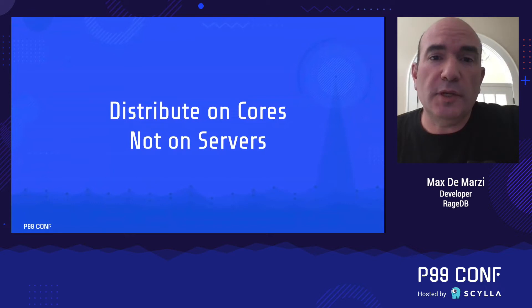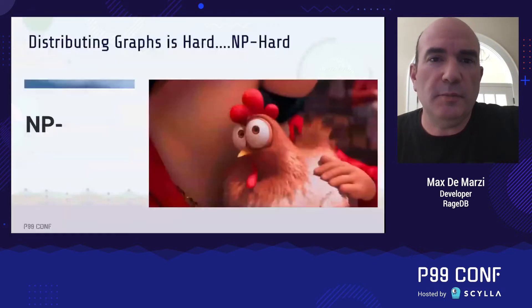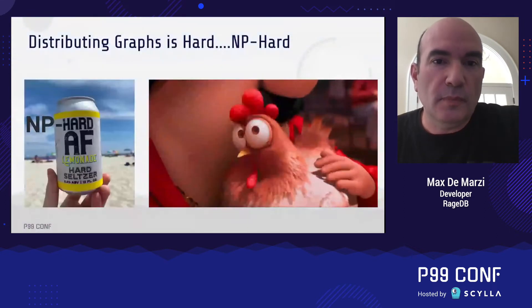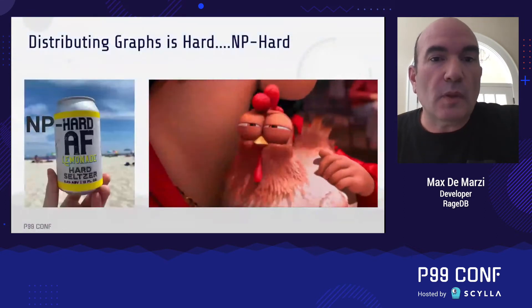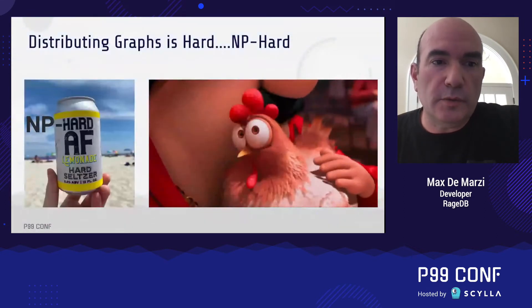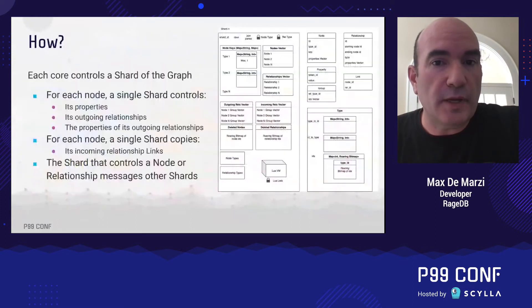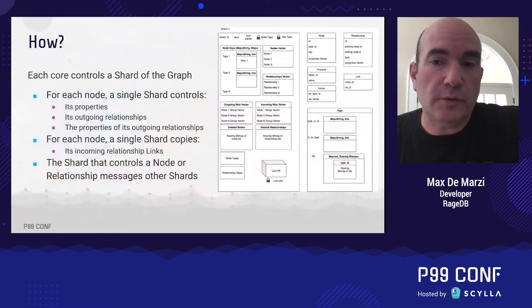Distributing a graph is hard — it's actually NP-hard, unless P equals NP, but then you've got other problems. So how are we going to do this? We are going to take advantage of the shards that Seastar provides. Each core is going to act like its own server, and each shard is going to control a piece of the graph.